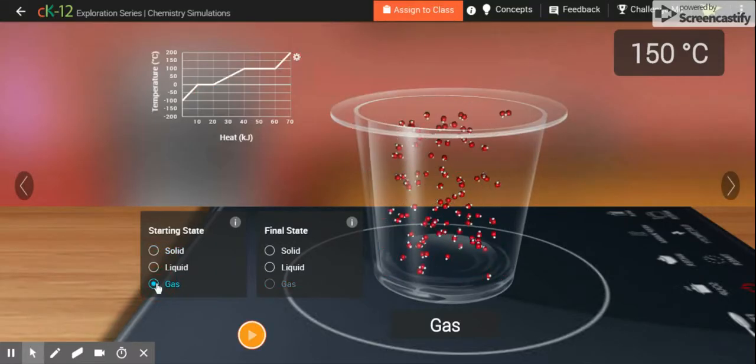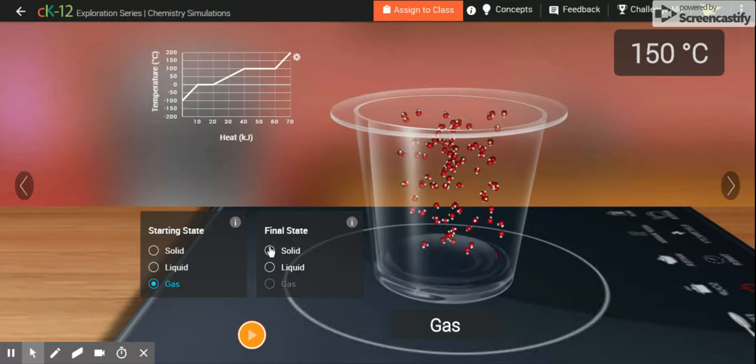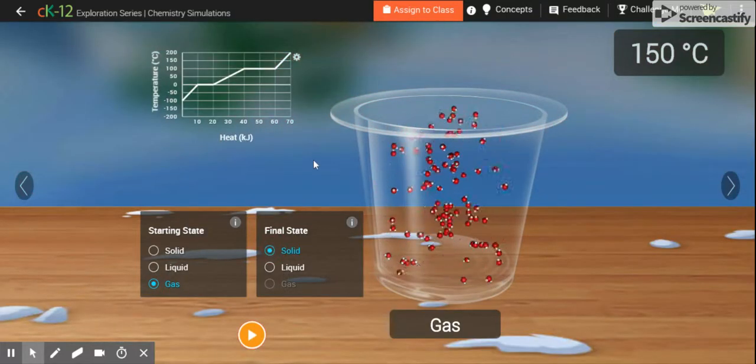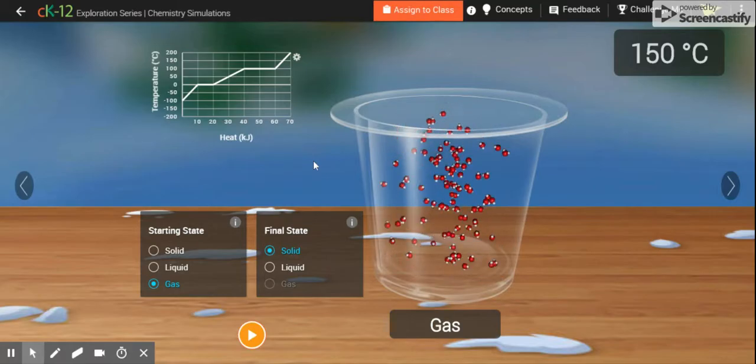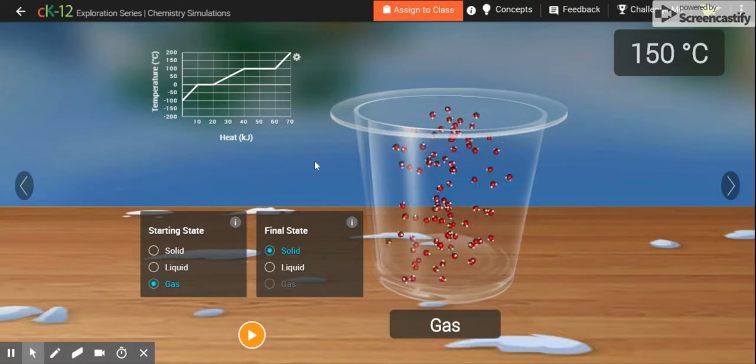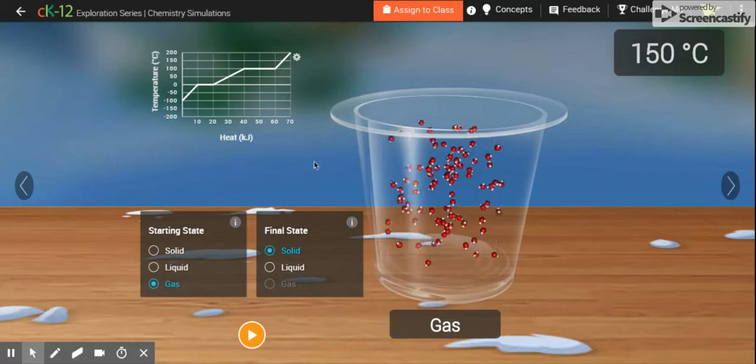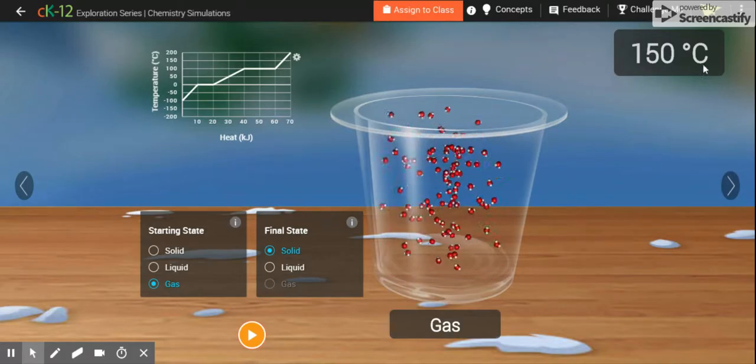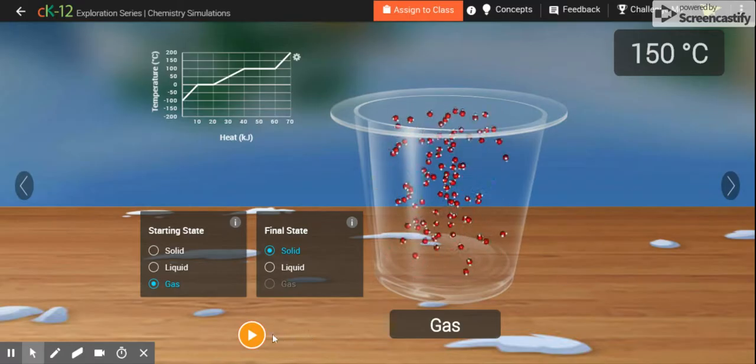And now we're just going to look at the reverse situation. So we're going to start out with a gas and we want to end up with a solid. And again, we want to pay attention to the temperatures that we see at the different phases, and particularly when they go from one phase to another. So again, notice we start out with a gas. Our temperature is 150 degrees Celsius.